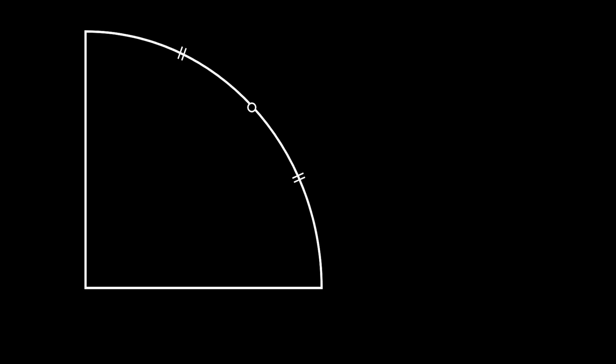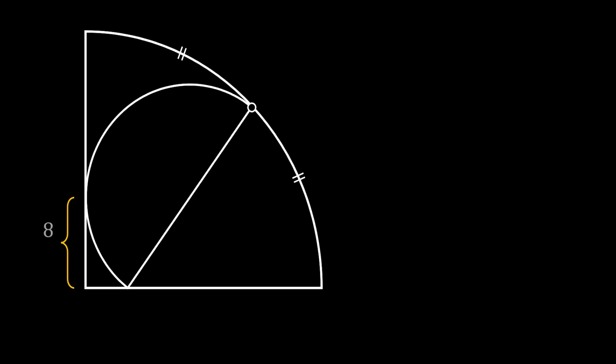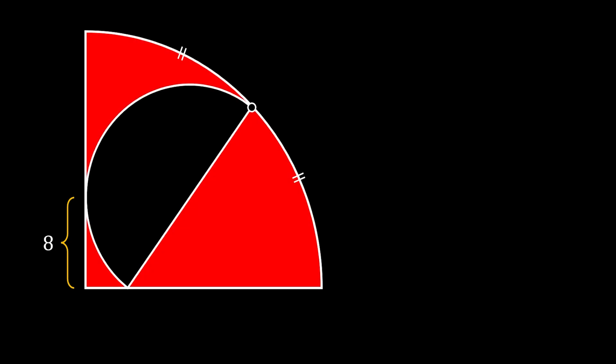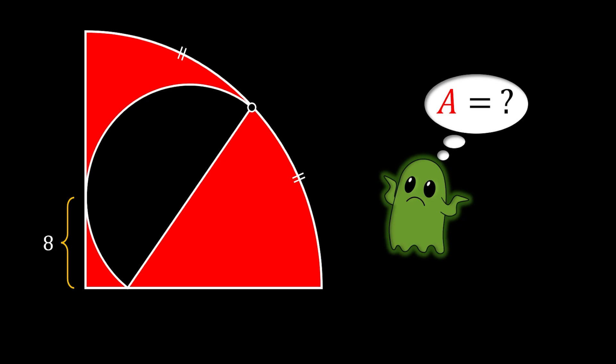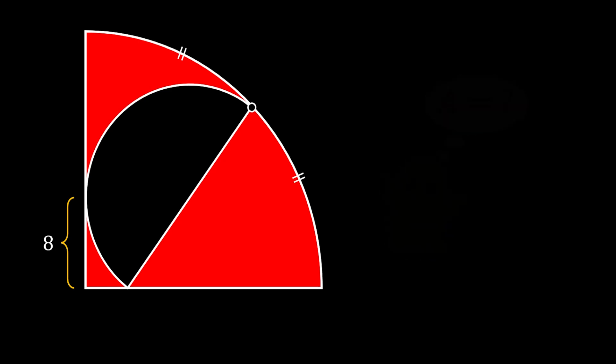Let's start with the quarter circle, then we will insert a point at the arc of this quarter circle so that it divides the arc into two identical pieces. Using this point, we will inscribe the half circle into our quarter circle just as shown in the sketch. If we know that the distance between the center of our quarter circle and the intersection point between the arc of the half circle and the radius of the quarter circle is equal to 8, is it possible to calculate this red shaded area — the difference between the quarter circle and the inscribed half circle?